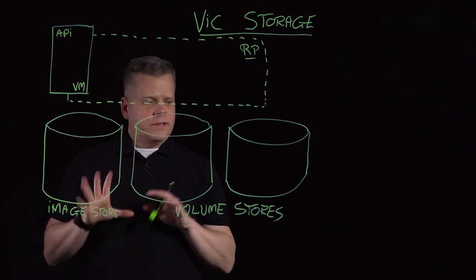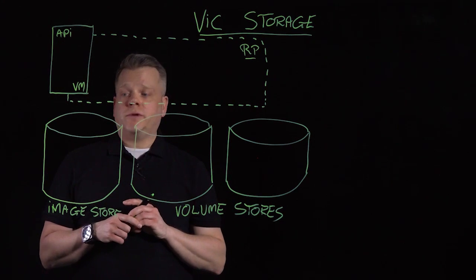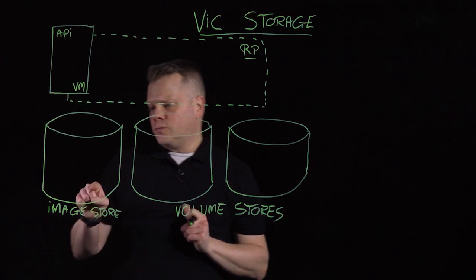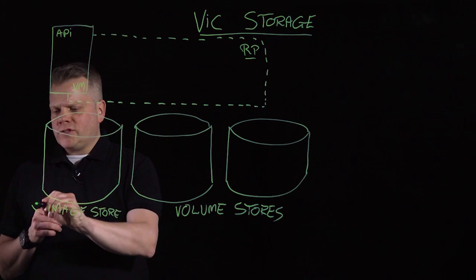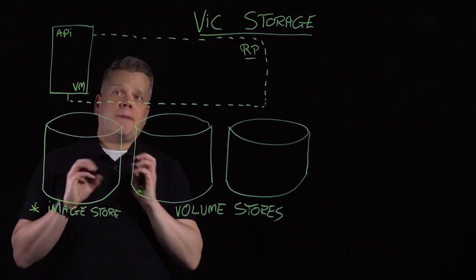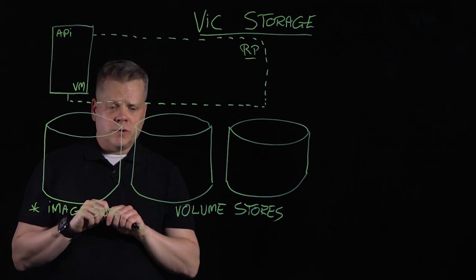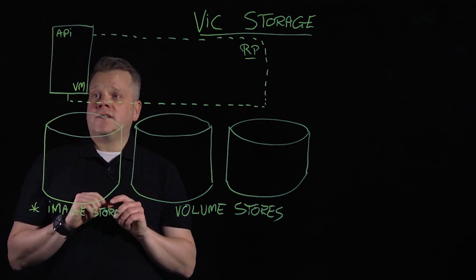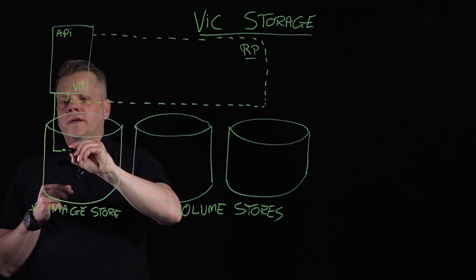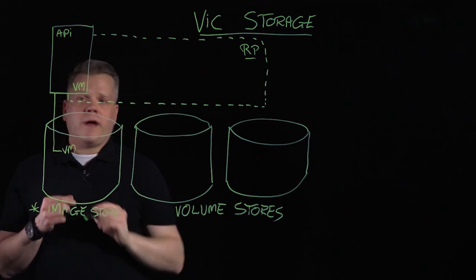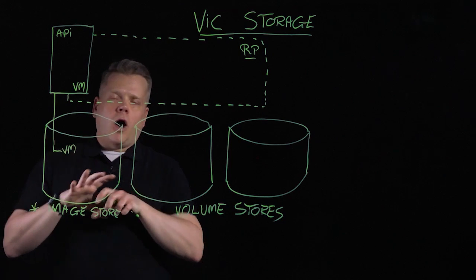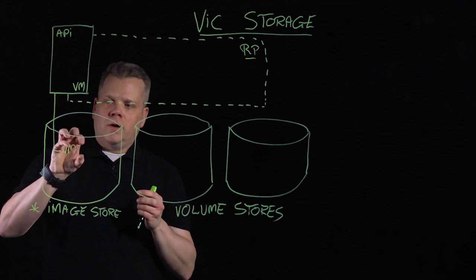Looking at the storage we can provide with vSphere Integrated Containers, there are three types. The first one is the image store — I'm going to put an asterisk next to it because it's the only storage that's mandatory as part of creating this virtual container host. It's used for two things: first, as the working directory for the virtual machine, so the VMX file, the VMDK file, and the logs — all the files that make up that VM live under this directory.